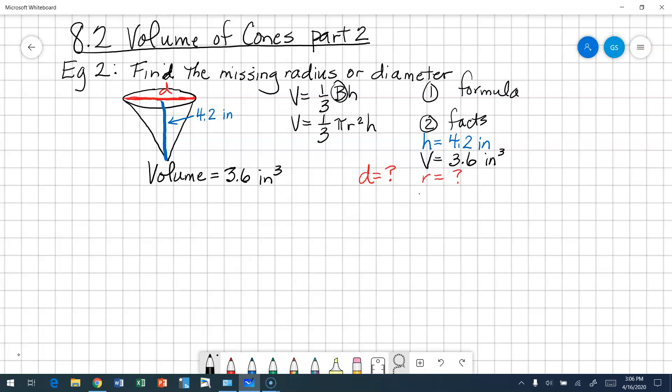Our next step is to take our facts and plug it in. So we're going to take our facts, we're going to plug it into our formula. Volume is 3.6 equals pi, radius we do not know, so R squared we do not know. But we do know our height, our height is 4.2. So what should we do next? We want to isolate the variable that we're looking for, so we're going to isolate R squared.